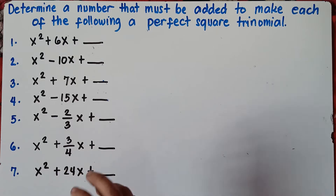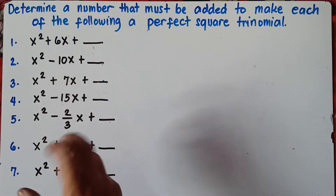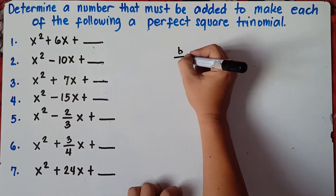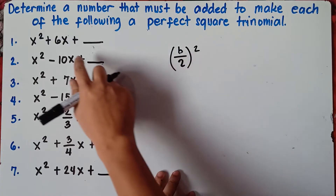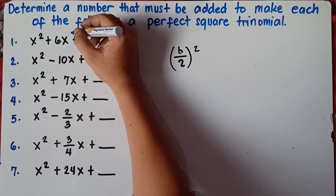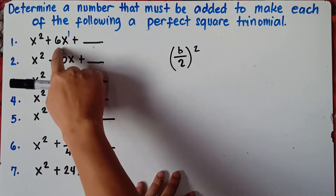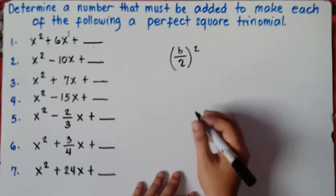We are told to determine a number that must be added to these following equations to make them a perfect square trinomial. To do that, we have a formula: b divided by 2, quantity squared. Our b is beside x — the linear term. We know it is the linear term if the highest exponent of x is just 1.